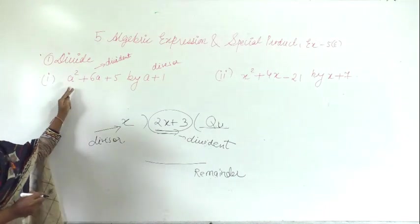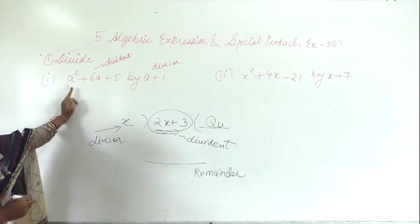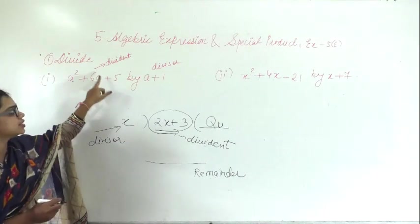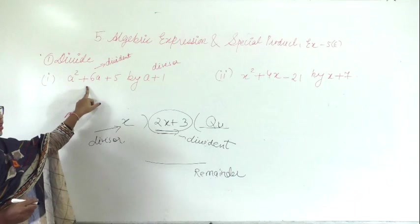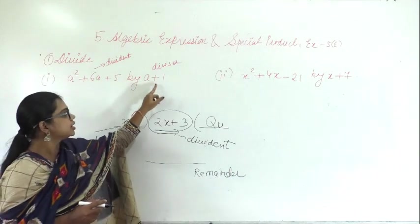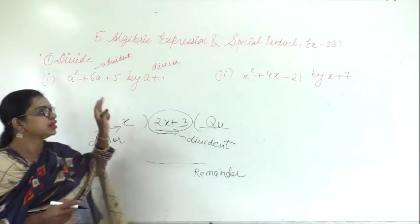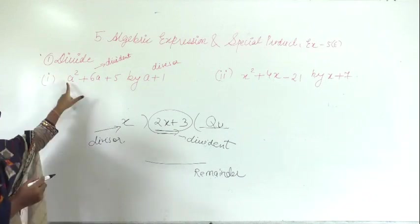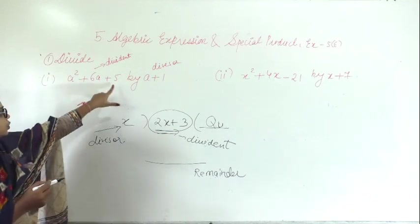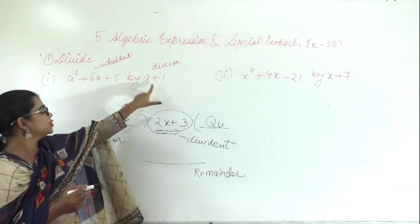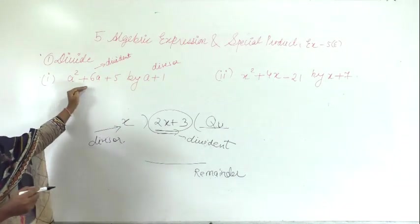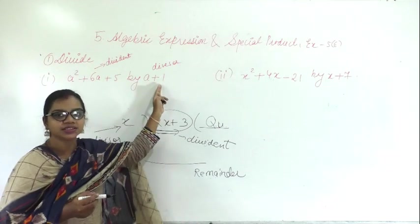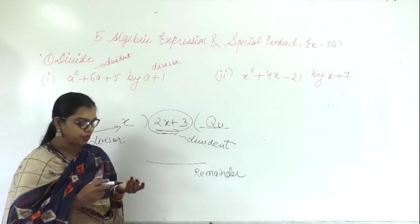In the same way, you are given x squared plus 6a plus 5 as the dividend, and the divisor is a plus 1. These are both polynomials. How many terms are there? 1, 2, 3 — 3 terms means trinomial, and 2 terms means binomial.